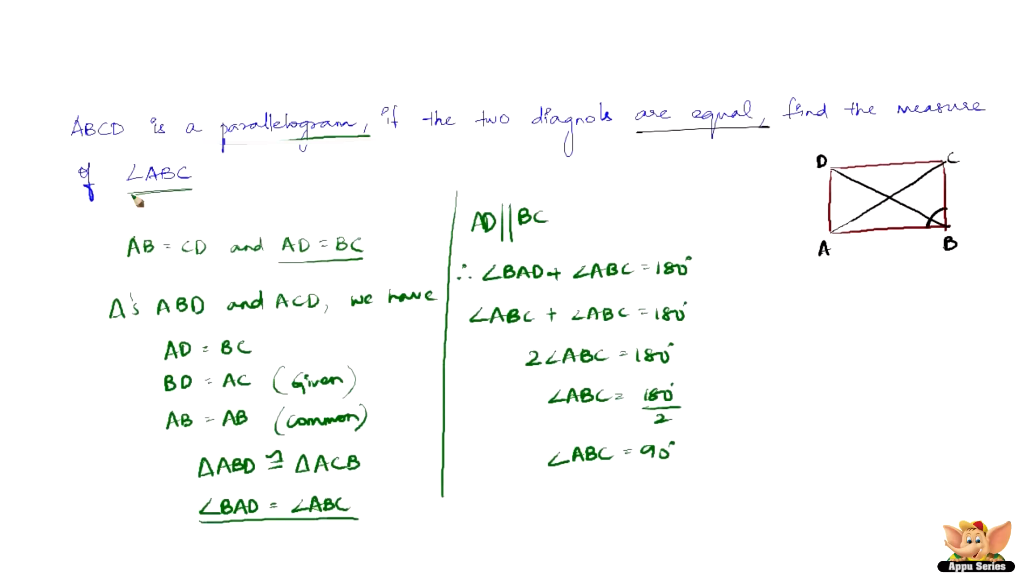So hence, now this is what we need to find. We need to find the measure of angle ABC. So we have found angle ABC to be 90 degrees.